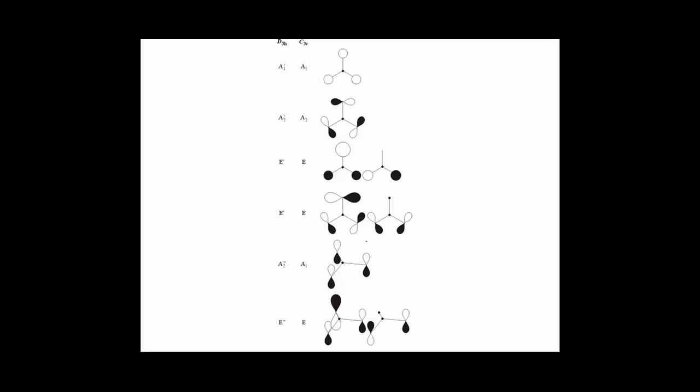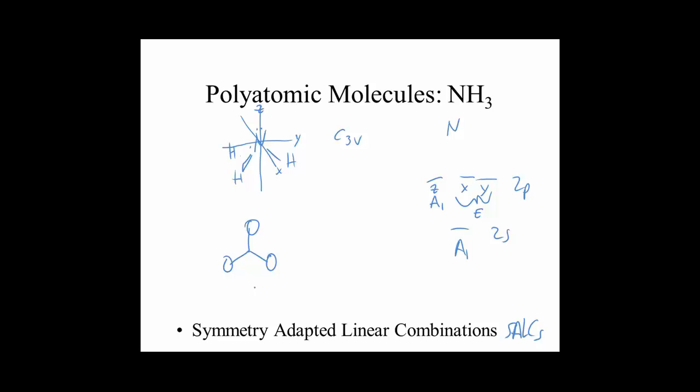And then again if we had p orbitals we'd have even more possible SALCs. We know the symmetry of these different SALCs. And we should have three SALCs because we have three atomic orbitals that we combined. One of them has A1 symmetry so that will be able to overlap with the pz on the central nitrogen as well as the 2s on the central nitrogen. Maybe there's some hybridization possibilities.